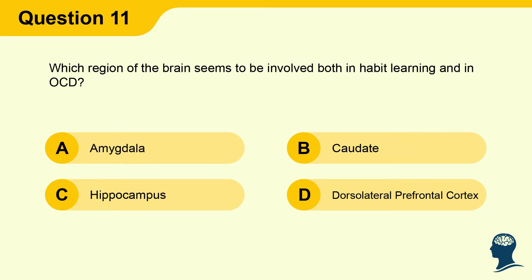Question 11: Which region of the brain seems to be involved both in habit learning and in OCD? A) Amygdala, B) Caudate, C) Hippocampus, D) Dorsolateral prefrontal cortex.